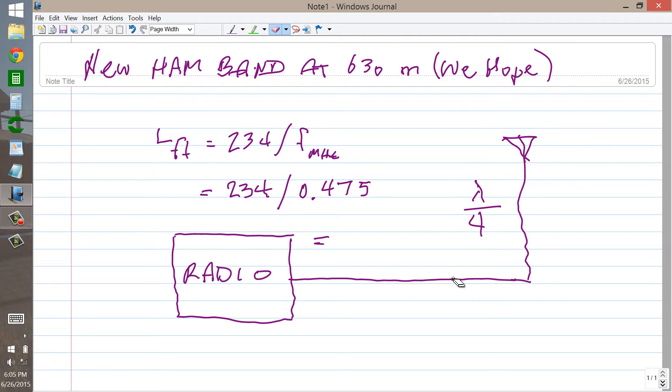Which happens to be 472 to 479 kilohertz, or 0.472 to 0.479 megahertz. It's quite a lot higher in frequency than the 2200 meter band, but not even as high as the standard AM broadcast band. In fact, it's just below the limits there.